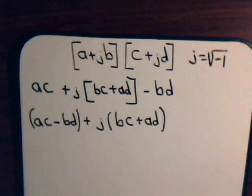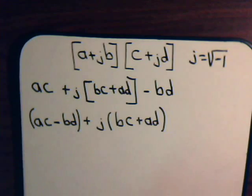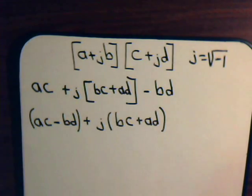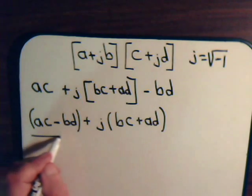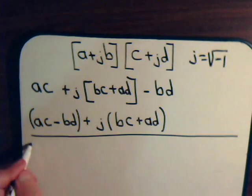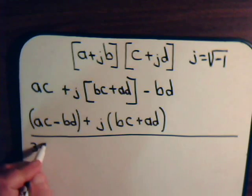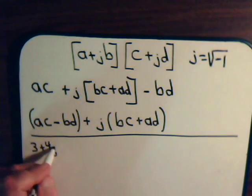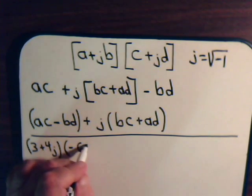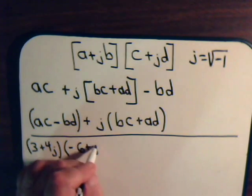It's just like multiplying two binomials together — no special rules — except we end up with a real component and an imaginary component. Let's take an example: we have 3 plus 4j, and we'll multiply this by minus 6 plus j3.